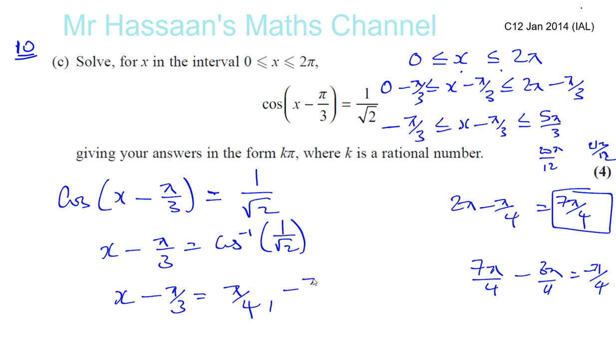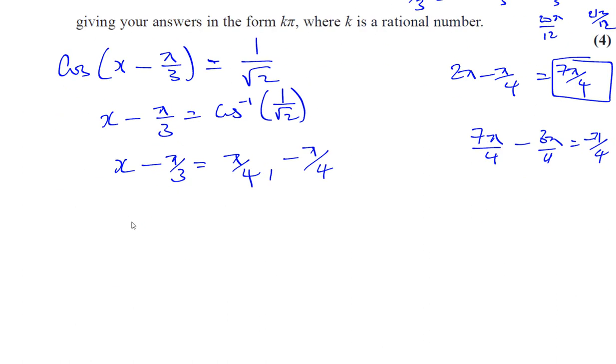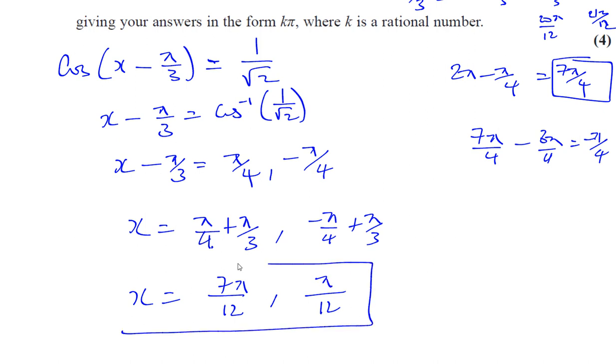So, your other solution is minus pi over 4. And those are the only two solutions within the range that we have. So, therefore, we have to then continue on and find what x is. So, we add pi over 3 to both of these. So, you're going to have pi over 4 plus pi over 3. And the other solution would be negative pi over 4 plus pi over 3. So, if you add these two together, you're going to get, that's going to be over 12. You're going to have 3 pi plus 4 pi, which is 7 pi over 12. And you're going to have, again, over 12, minus 3 pi plus 4 pi, which is pi over 12. So, these are the two solutions within our range, which are solutions to this equation.